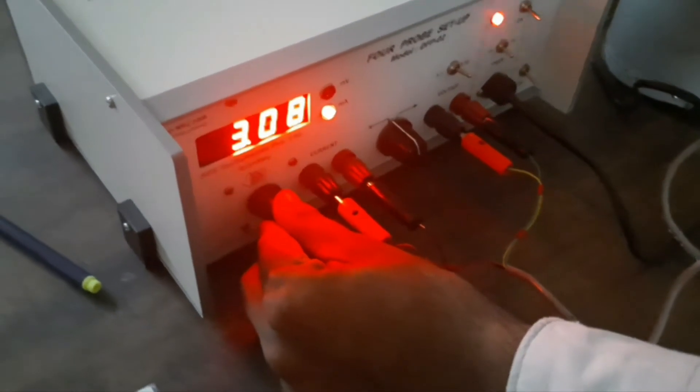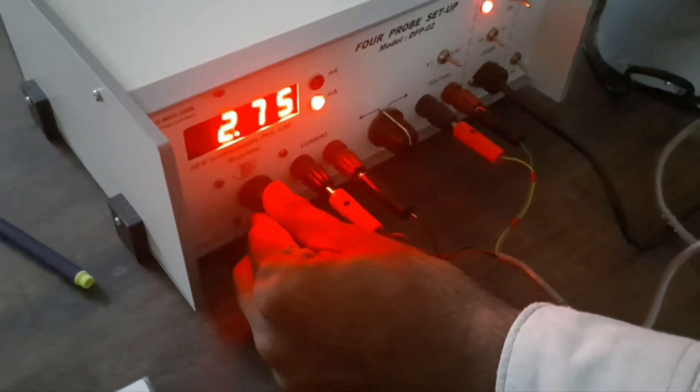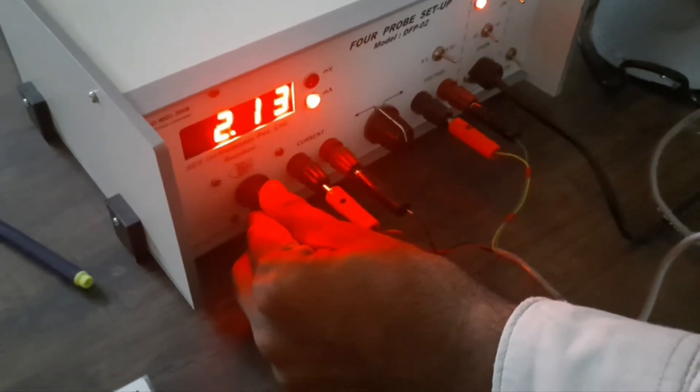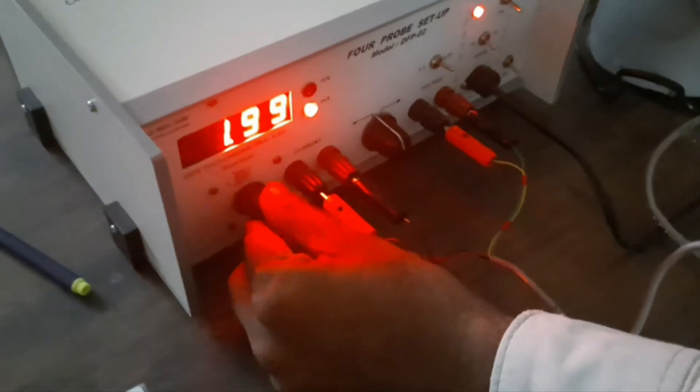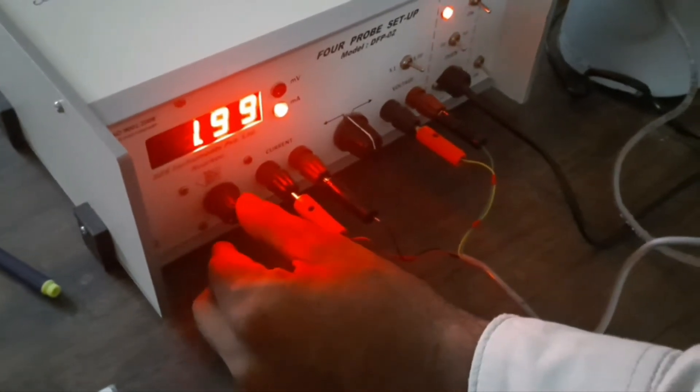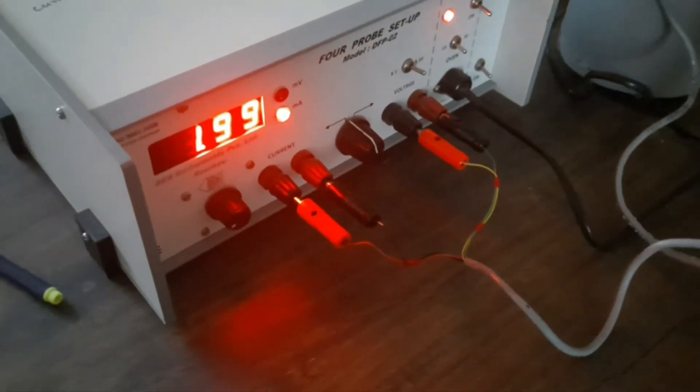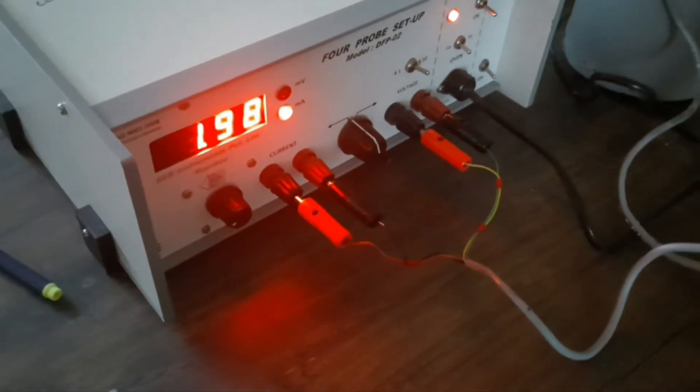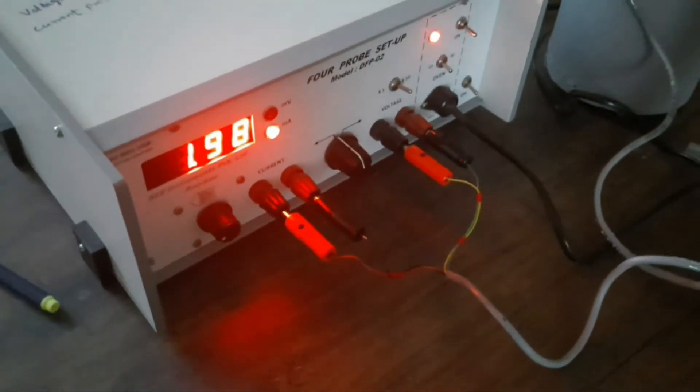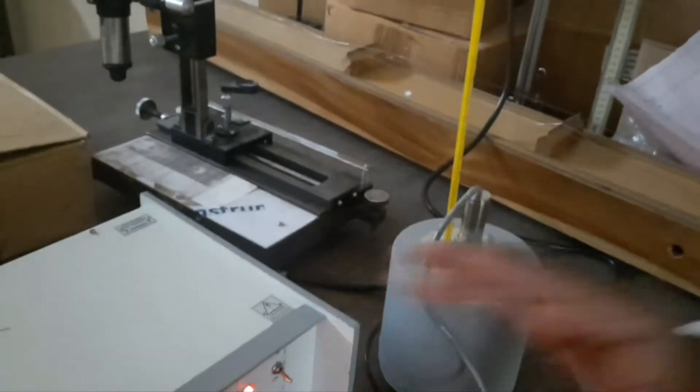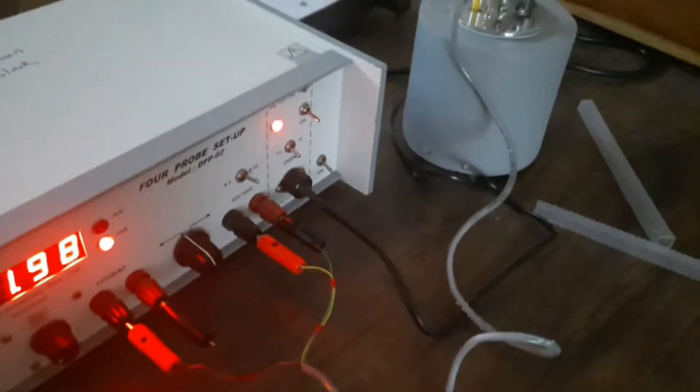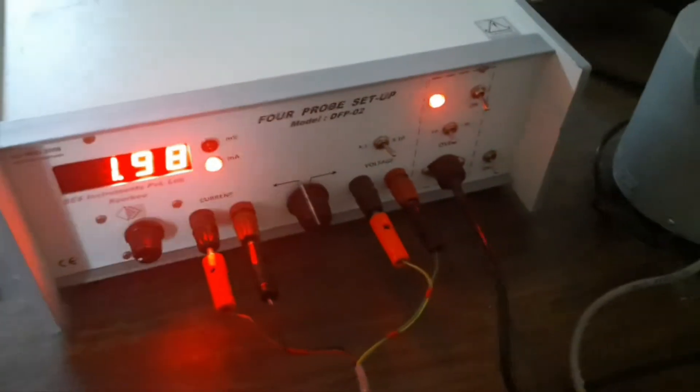For example, 2 mA, it is 2 to 3 mA, 1.9 that is close to 2 mA. So 2 mA. This is the corresponding current and voltage. Temperature and voltage note on.